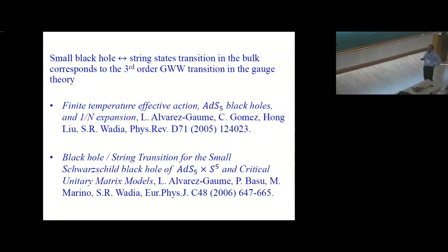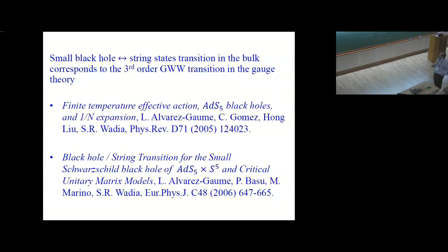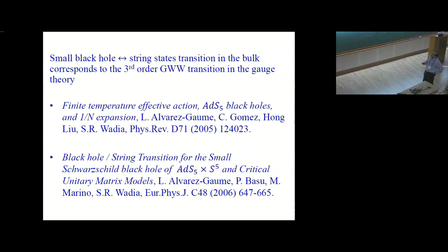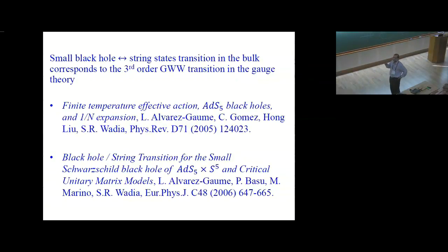Using the ADS-CFT correspondence, Spenta went on to study other situations. One important paper concerns the finite temperature effective action for AdS5 black holes, and another treats the black hole to string transition for small Schwarzschild black holes in AdS5×S5. Both of these use the large-N techniques that Spenta had mastered in Chicago. What they show is that the small black hole to string transition in the AdS5 bulk is, in the boundary theory, precisely the third-order Gross-Shatashvili-Wadia transition.